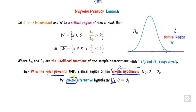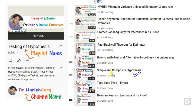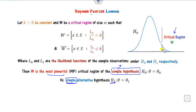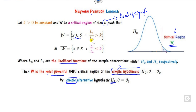To identify whether a hypothesis is simple or composite, you can watch my previous lecture on simple or composite hypothesis — channel name Dr. Hrish Garg, playlist: testing of hypothesis. The second thing is, when you define the critical region W, alpha is called the level of significance, or type 1 error. L1 and L2 are the likelihood functions. For any value in region W, the likelihood function under H1 divided by H0 must be greater than K, and your target is to find this value of K.